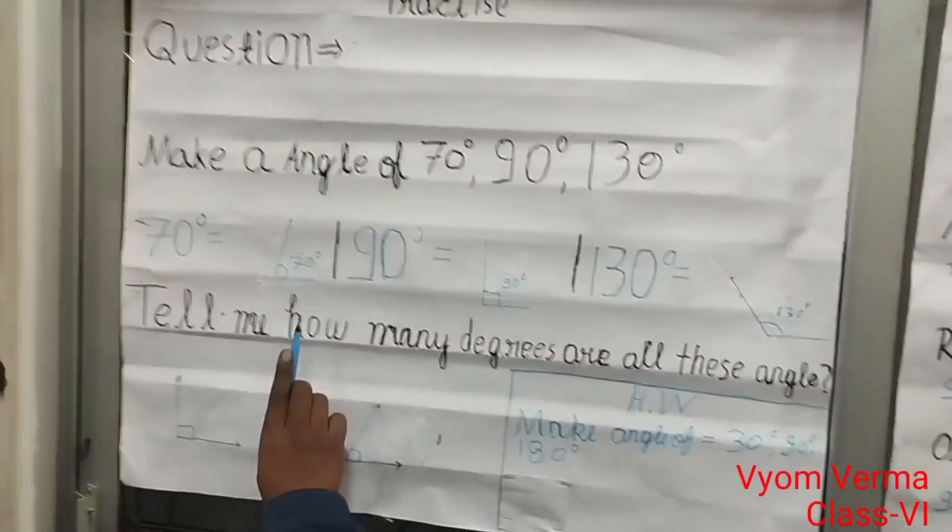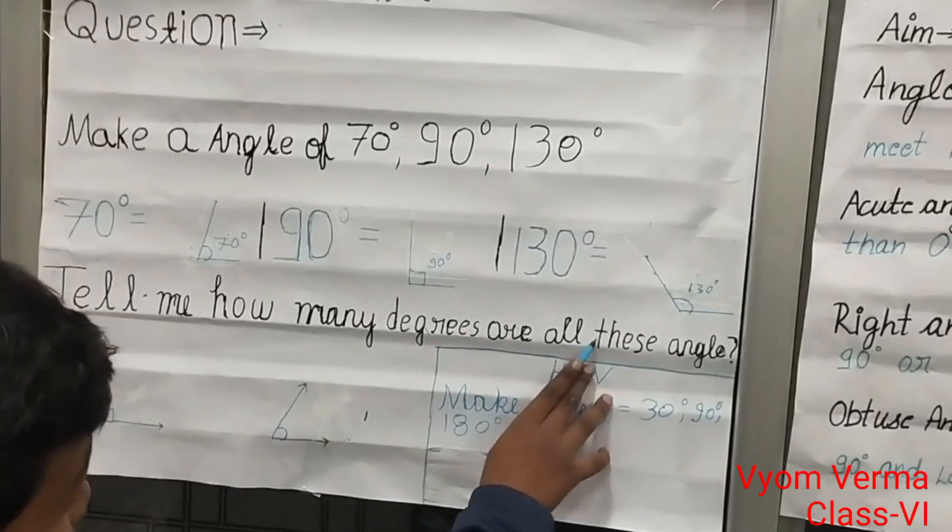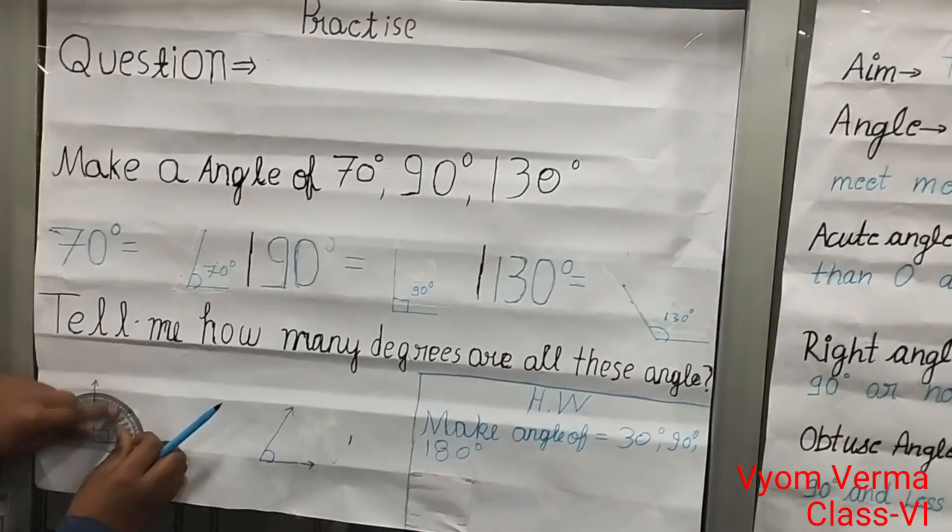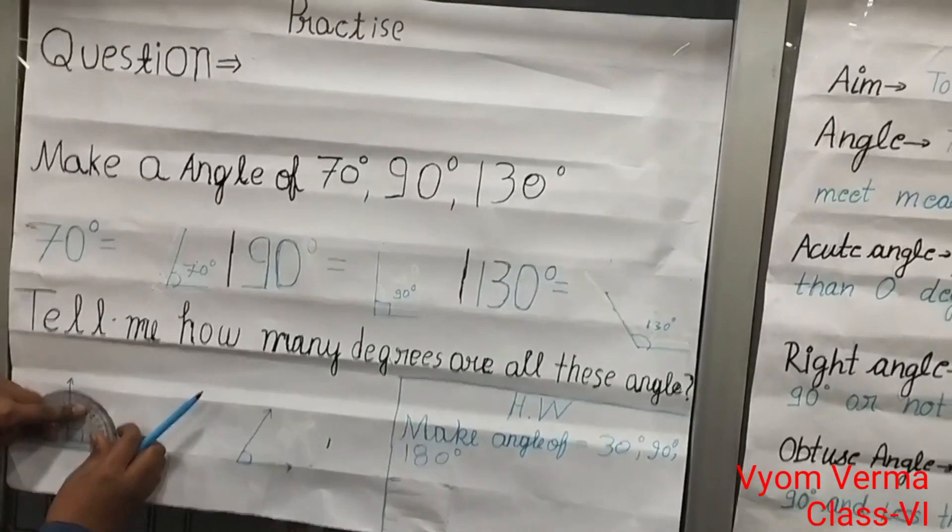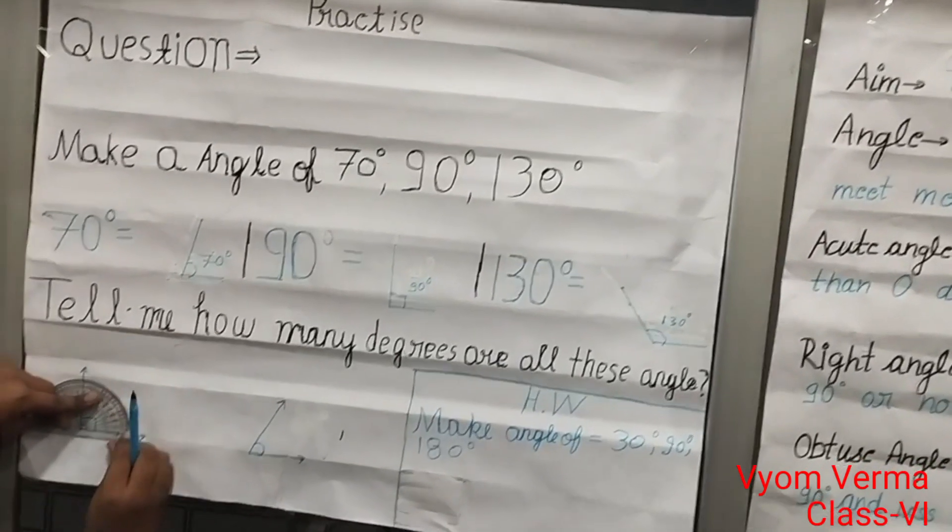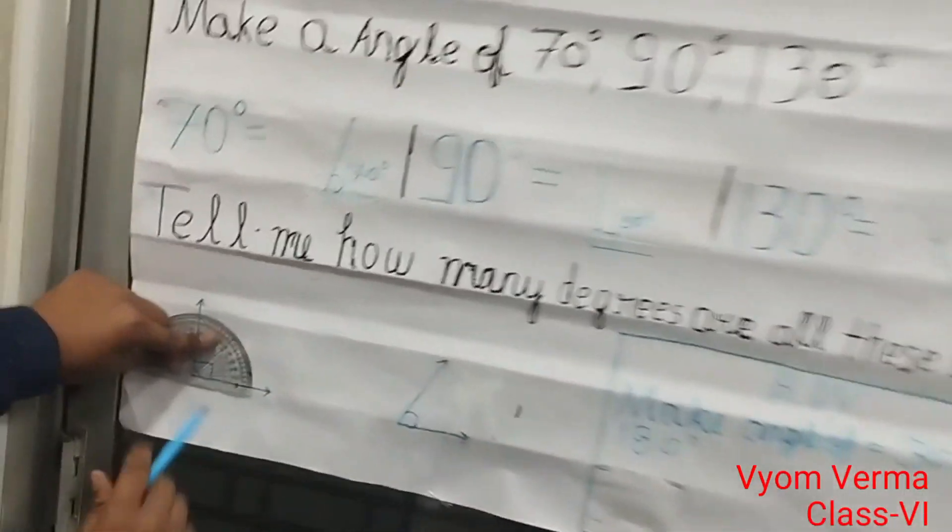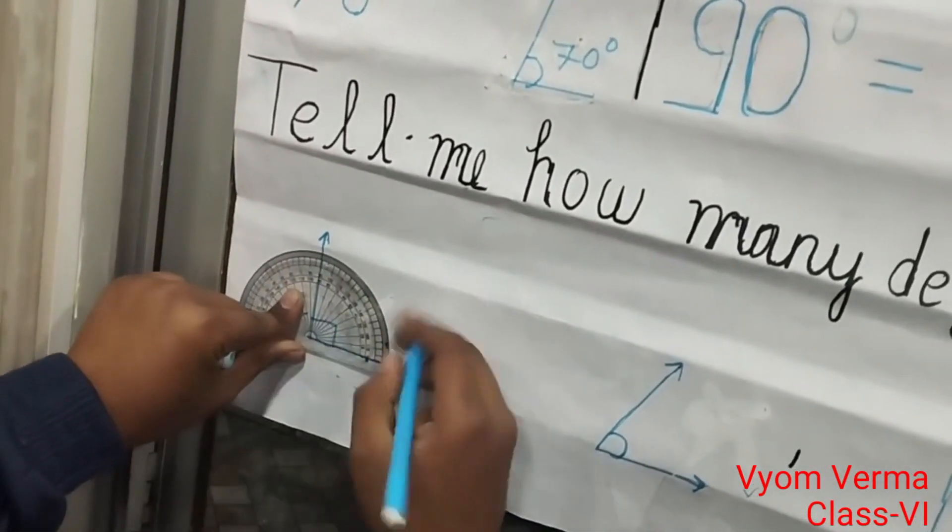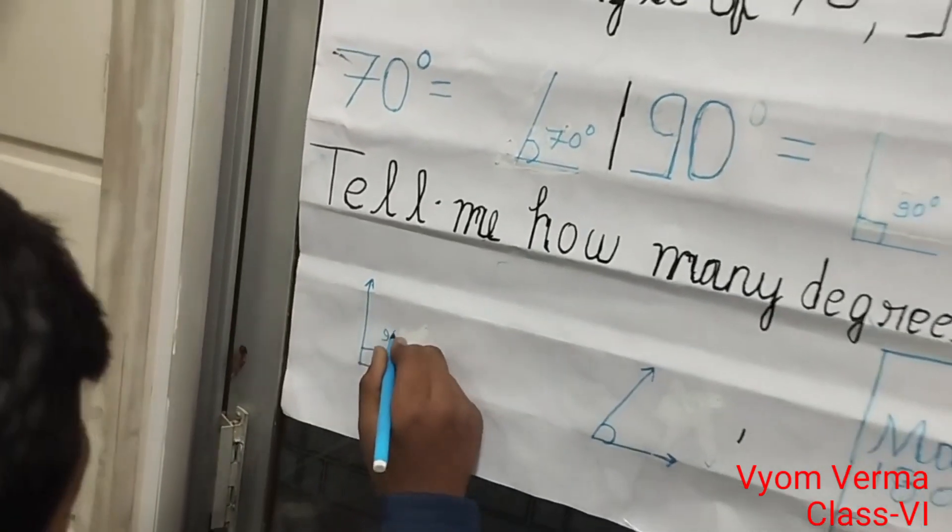The second question: tell me how many degrees are all these angles. Let's do it. Here you can see, put the protractor on the straight line like this. It is a 90-degree angle. So write 90 degrees.